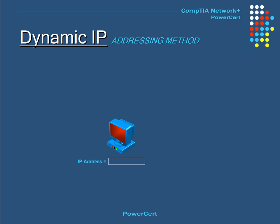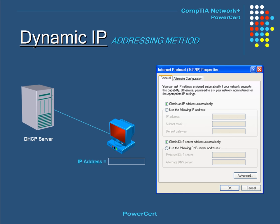Every computer on the network must have an IP address for communication. There are two ways a computer can be assigned one: dynamic IP or static IP. A dynamic IP is where a computer gets an IP address automatically from a DHCP server. DHCP stands for Dynamic Host Configuration Protocol. A DHCP server automatically assigns a computer with an IP address and can also assign a subnet mask, default gateway, and DNS server. When the option to obtain an IP address automatically is selected, the computer sends out a request and the DHCP server assigns an IP from its pool.